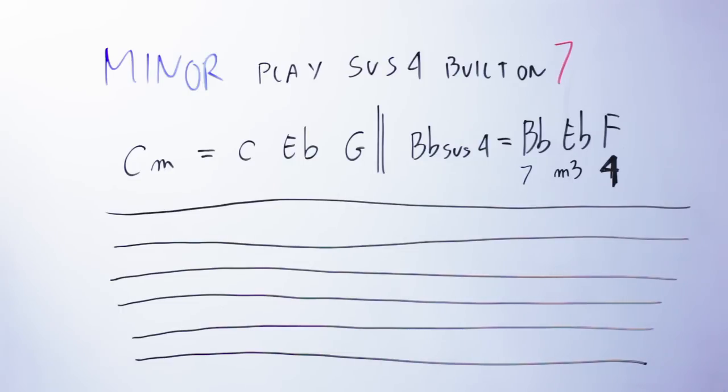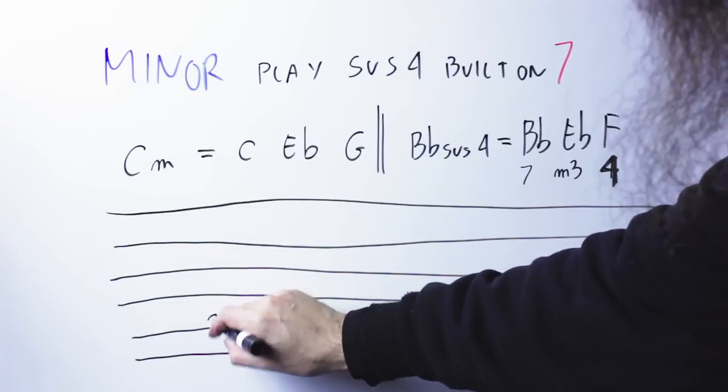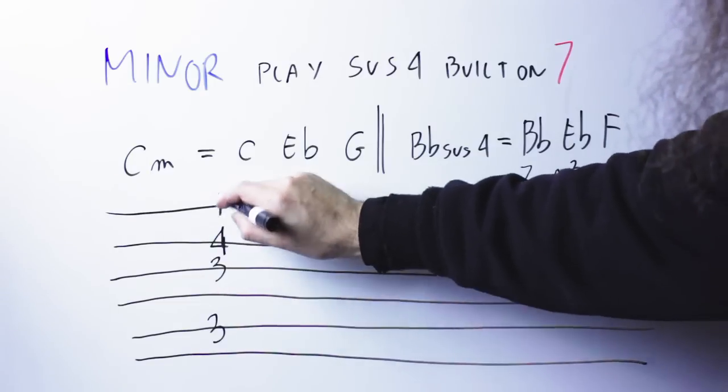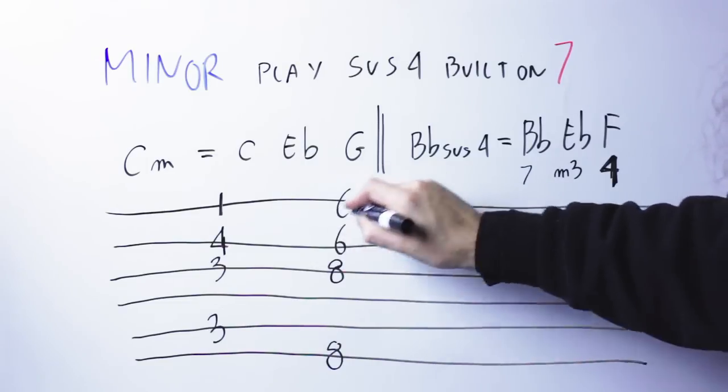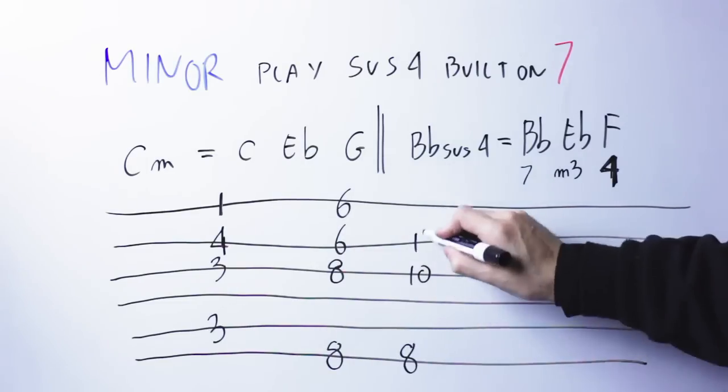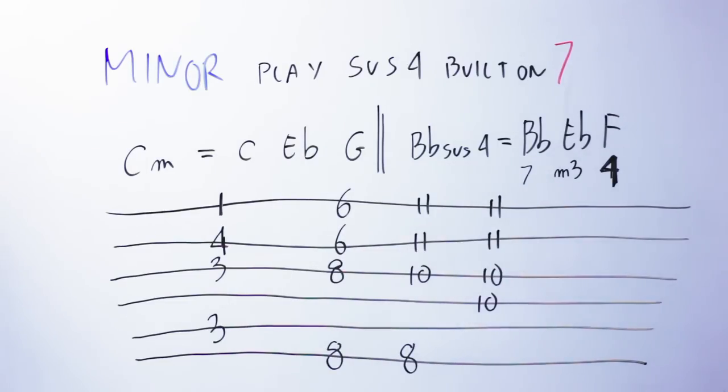So, on one of the low strings, I'm going to play the C note, and then, on the top three strings, I'm going to play the B flat sus four chord. Using the three shapes before, I end up with three possible playable shapes to play this chord. One is this.